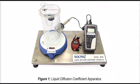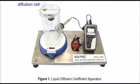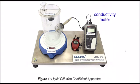We have a magnetic stirrer, and we have the diffusion vessel here, and we have the diffusion cell here. We also have a stopwatch and a conductivity meter. This is the complete set of the liquid diffusion coefficient apparatus.